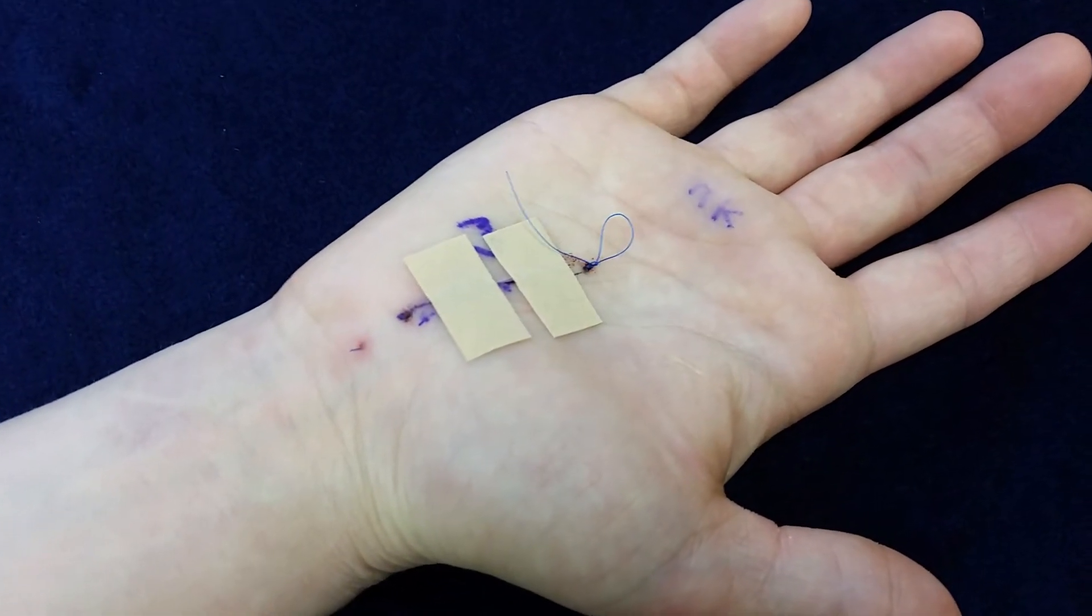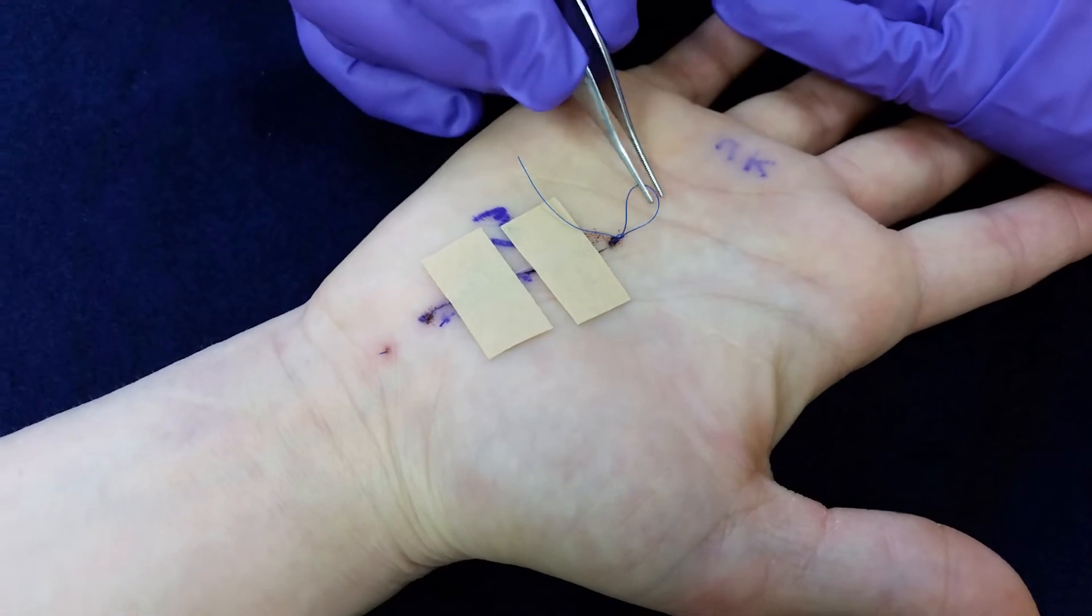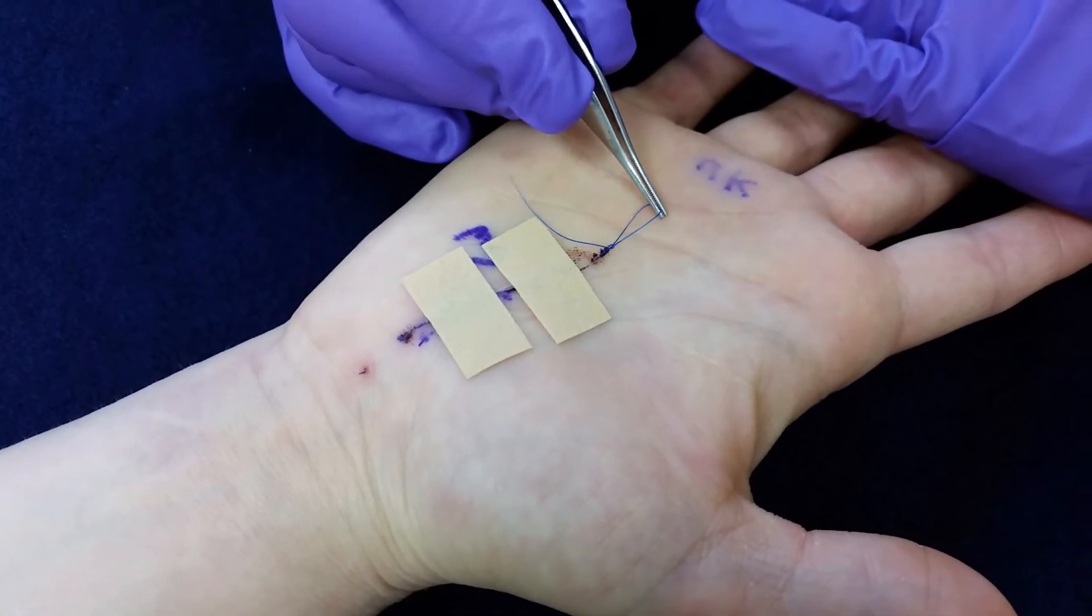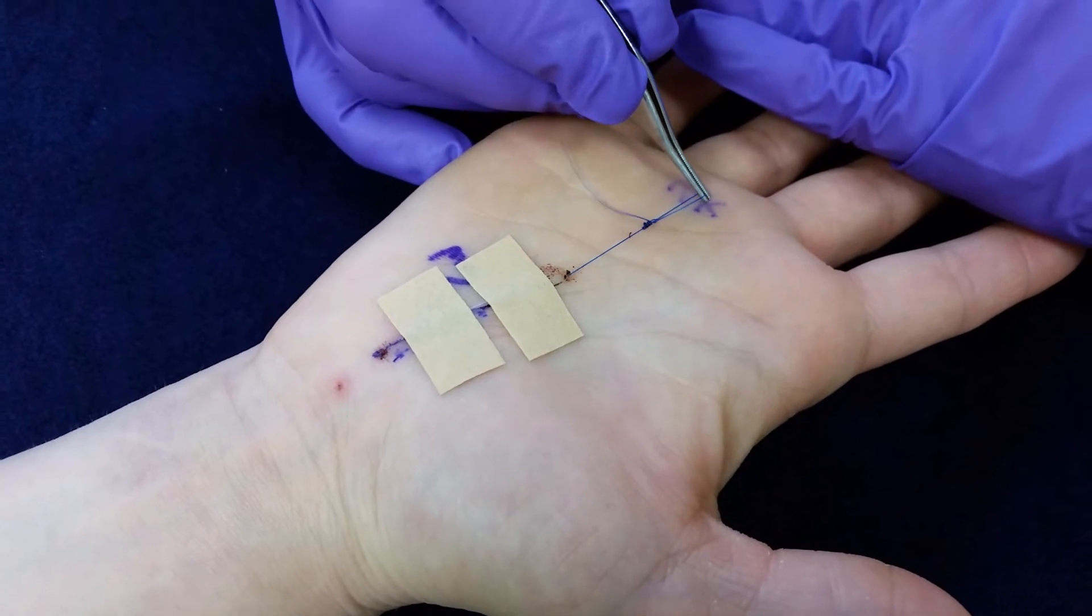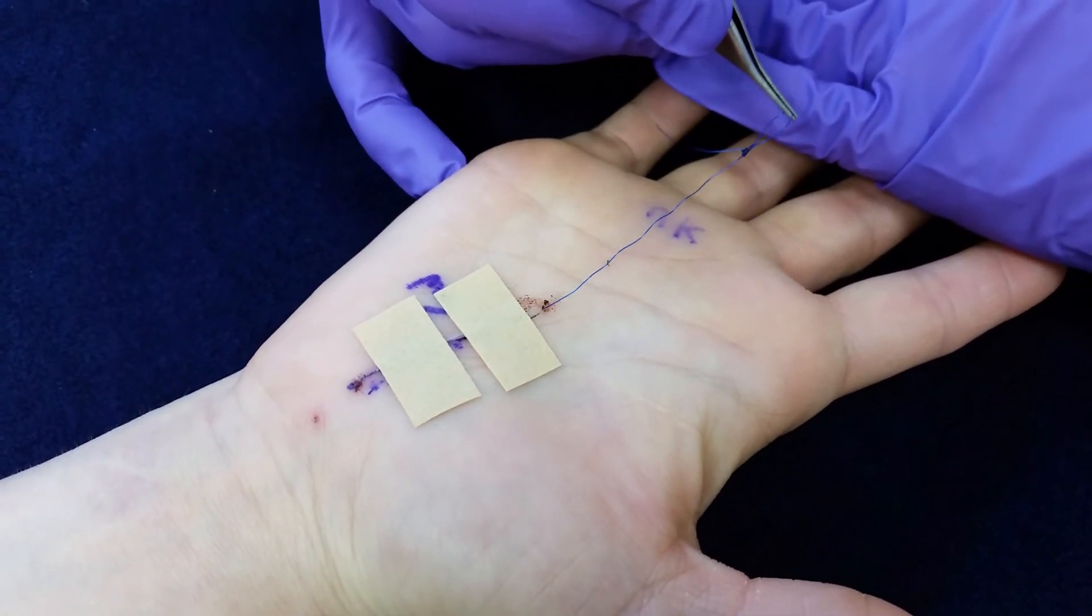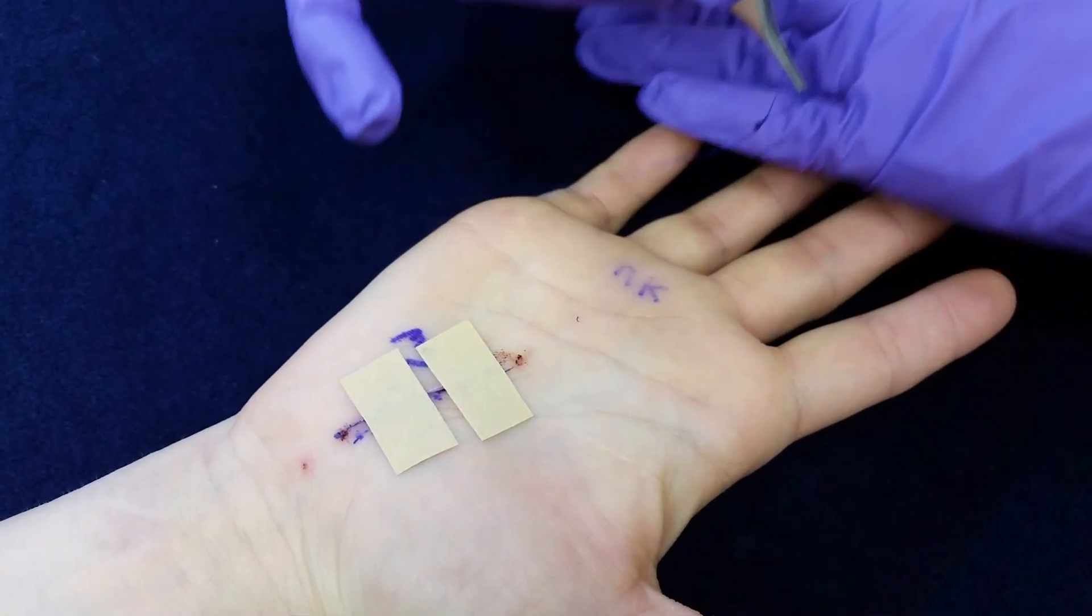And then the other side of the loop we're just going to gently pull. Not with great force, we're just going to slowly pull it out. It's a single stitch all the way through and you'll see it just comes out like that.